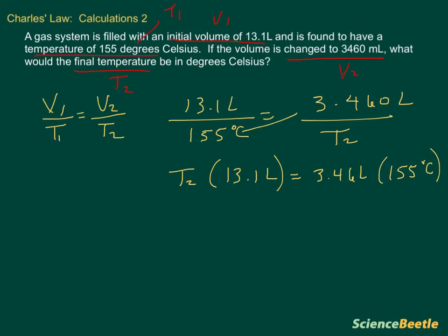Now that we're here, we can get T2 by itself by dividing by 13.1. We're going to take 13.1 and divide it here, and divide it on the other side as well. That cancels here, and we're left with T2 on the left-hand side.